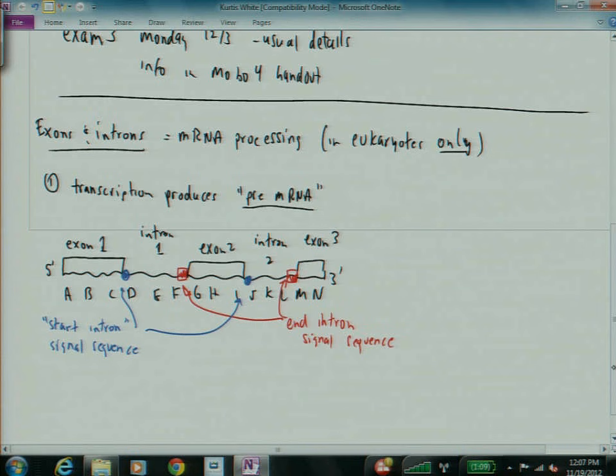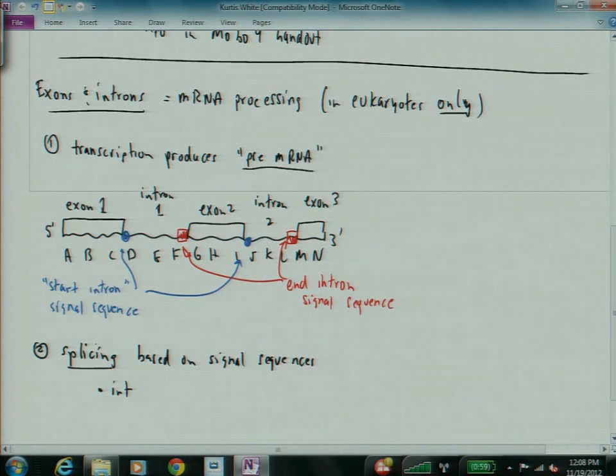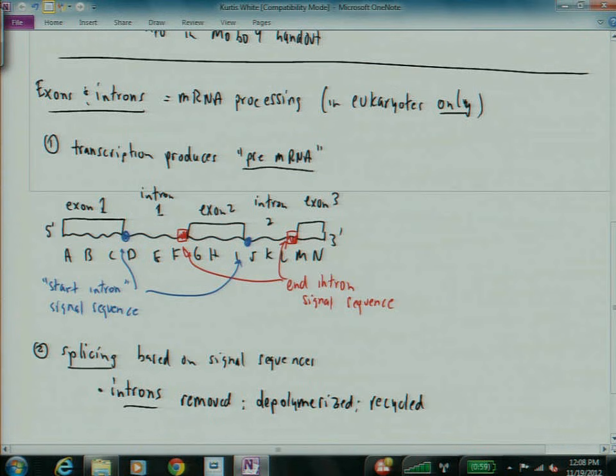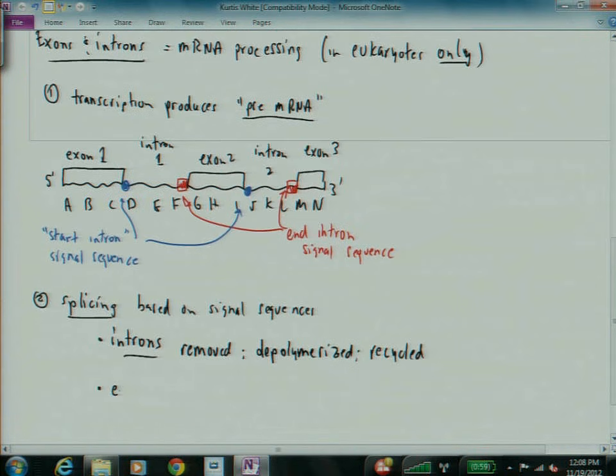So splicing is based on signal sequences. Introns are removed. They are depolymerized and they are recycled. Break them down to nucleotides and use them over. Exons are kept and joined.